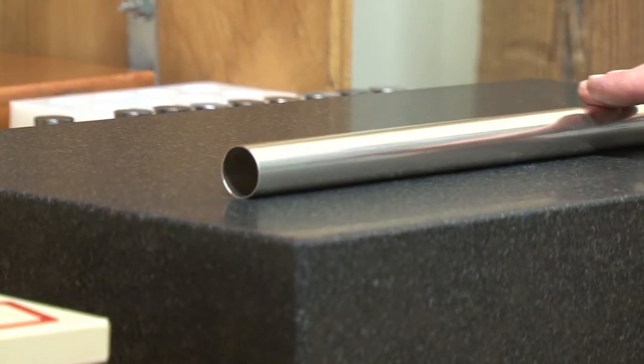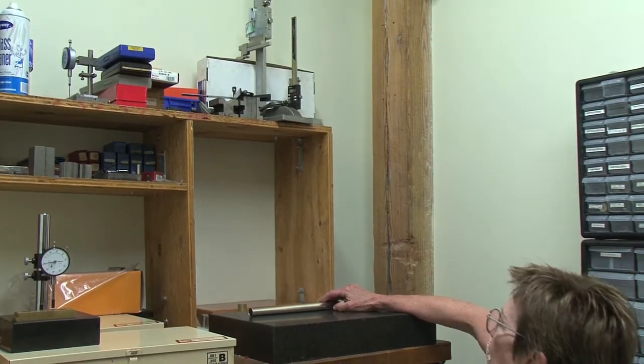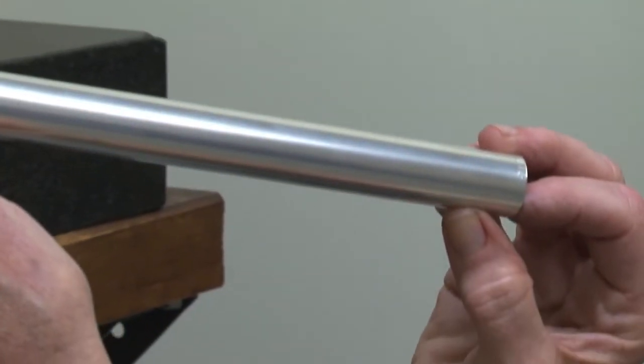This tube will become the center joint of a flute, sterling silver, and one of our important checks for quality is straightness and concentricity.